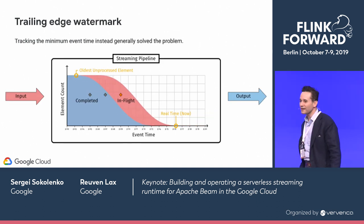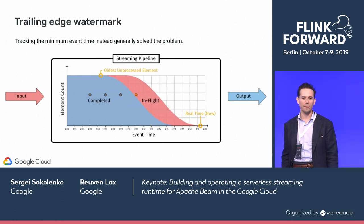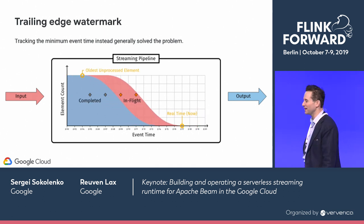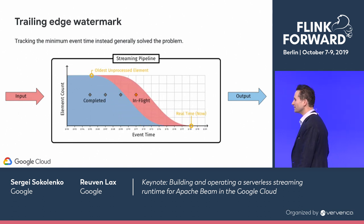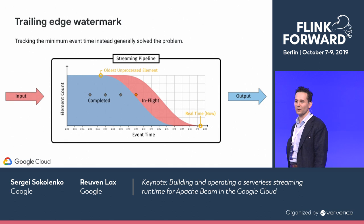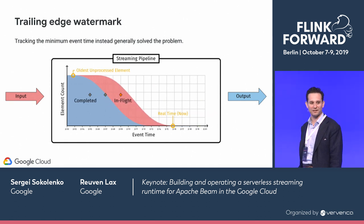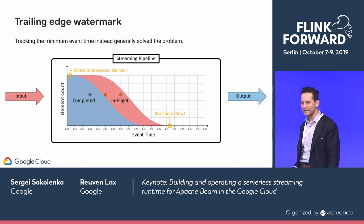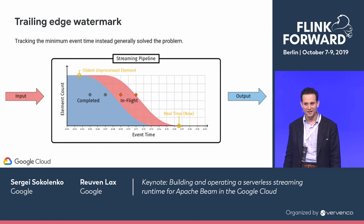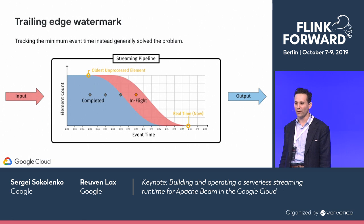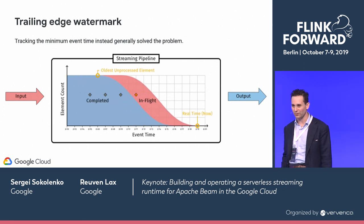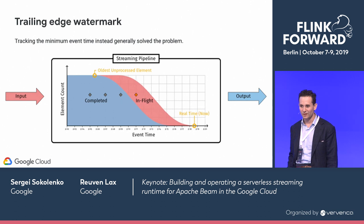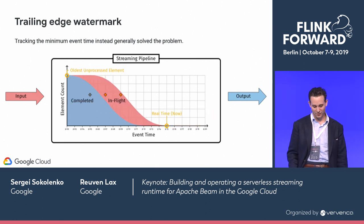What we ended up doing is the trailing edge watermark, which is what ended up in the Millwheel paper and in systems such as Flink, Dataflow, and Beam. Instead of starting with the latest timestamp, you track the oldest timestamp you've seen. Internally the system can track this completely; externally you can estimate it. Often, if your data comes from a high-volume source from many places, even the estimates tend to be pretty good. This is what we've used ever since, and it has worked fairly well.